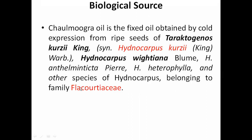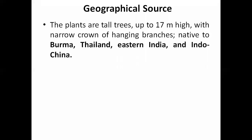All of these species belong to the family Flacourtiaceae. Coming to the geographical source and agroclimatic requirements: the plant is a tall tree, up to 17 meters in height, with a narrow crown of hanging branches. It is native to Burma, Thailand, Eastern India, and the Indochina region, where it can grow or be cultivated.